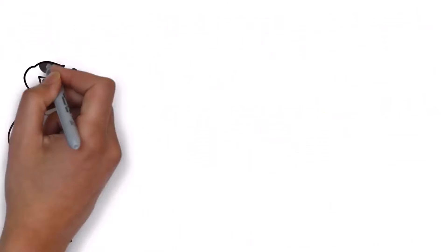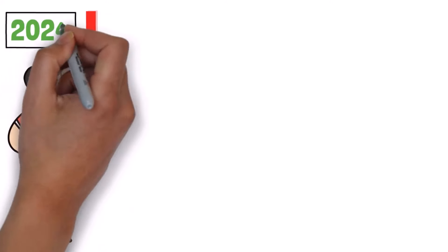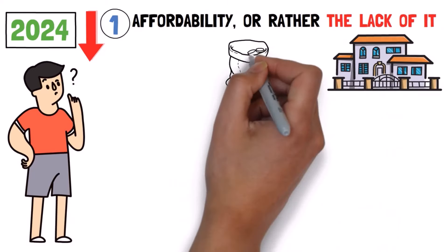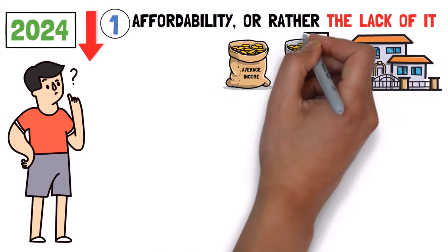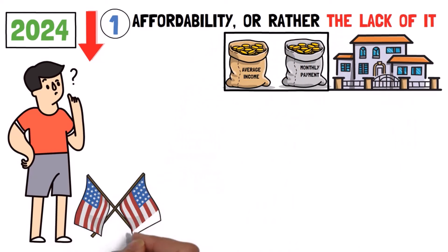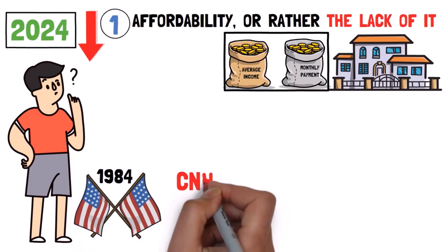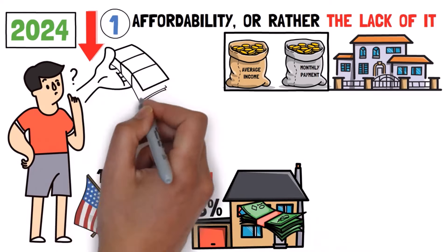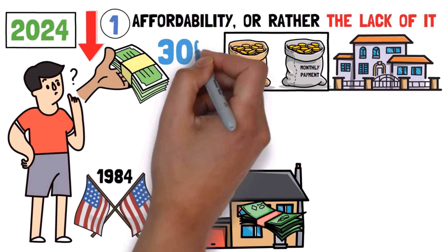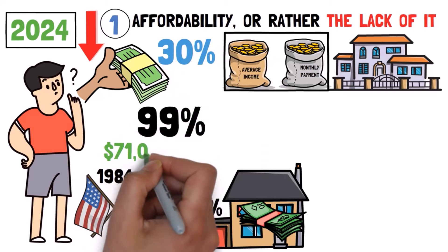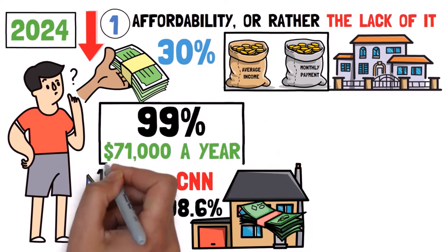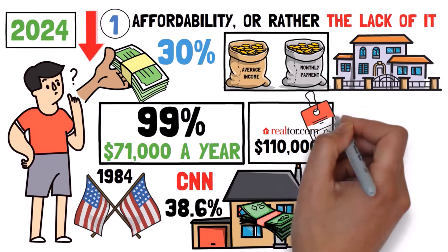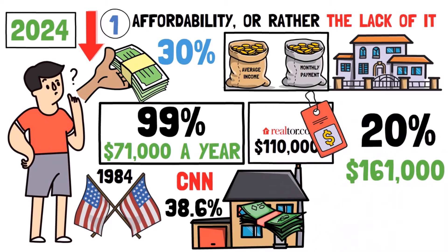Let's consider the reasons why some analysts think the housing market will decline in 2024. The first reason is affordability, or rather the lack of it. To understand the housing market, you can compare the average home price or monthly payment to the average income in an area. Currently, across the United States, it's the least affordable it's been since 1984. CNN reported that 38.6% of the median household income is needed to cover the monthly cost of an average home. Typically, a home is considered affordable if this is below 30%, making 99% of the US unaffordable for someone earning $71,000 a year. Realtor.com found that you'd need an income of nearly $110,000 to buy the average-priced home with a 20% down payment nationwide, and $161,000 on the West Coast.